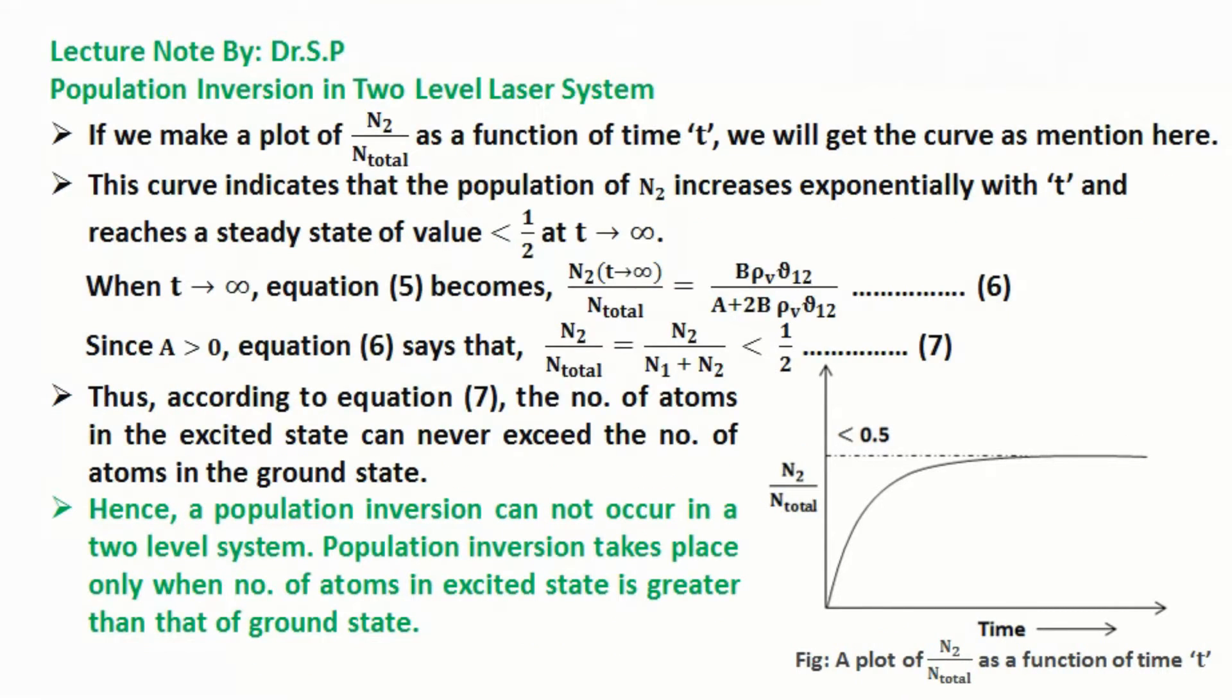If we make a plot of N2 by N total as a function of time t, we will get the curve as mentioned here. This curve indicates that the population of N2 increases exponentially with t and reaches a steady state of value less than 1 by 2 at time t tends to infinity.